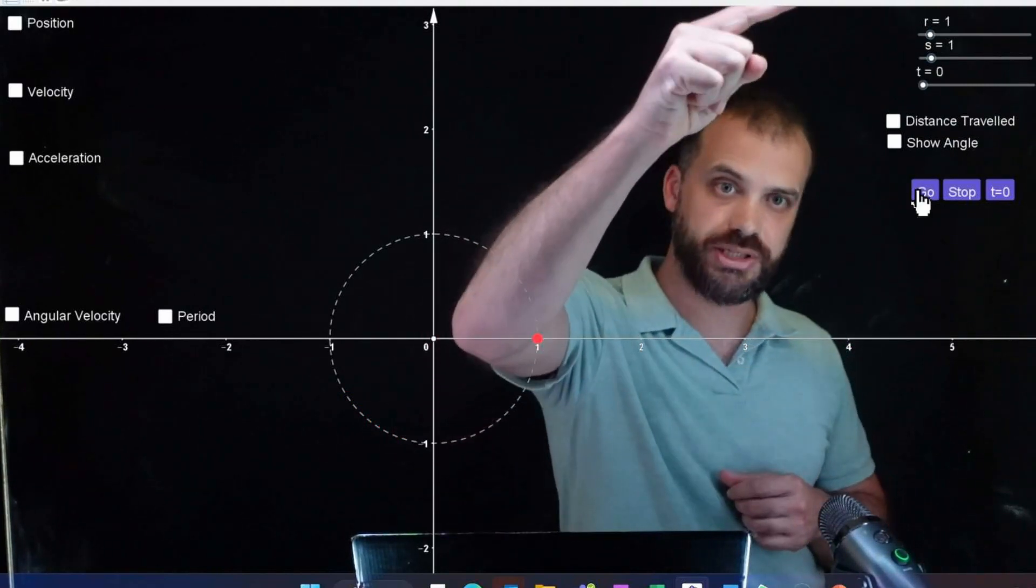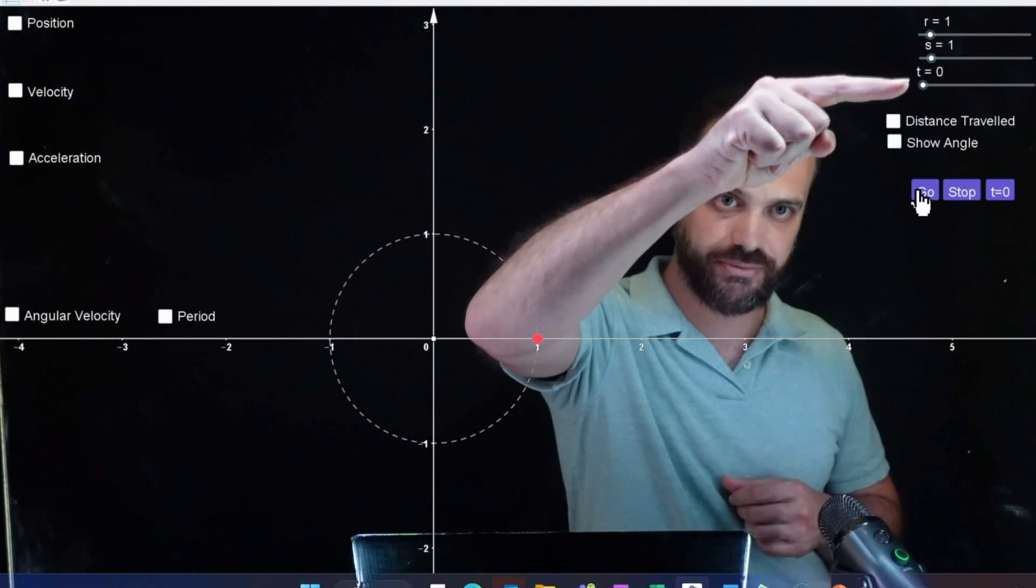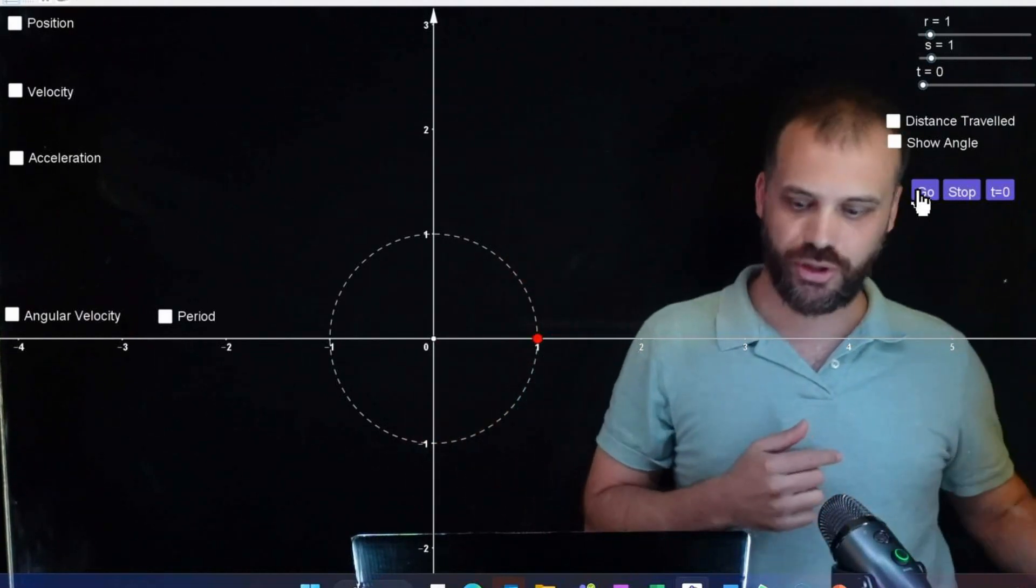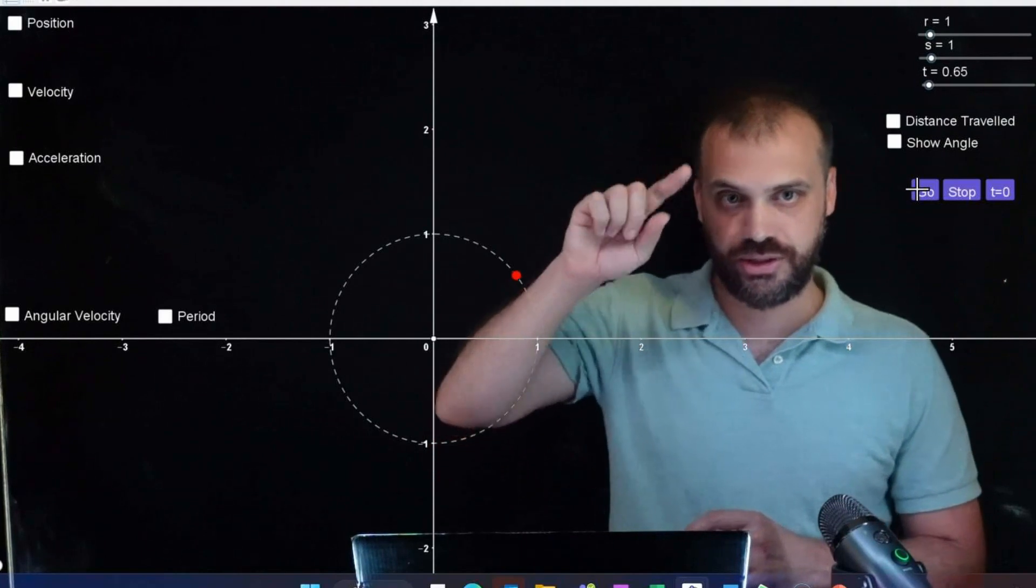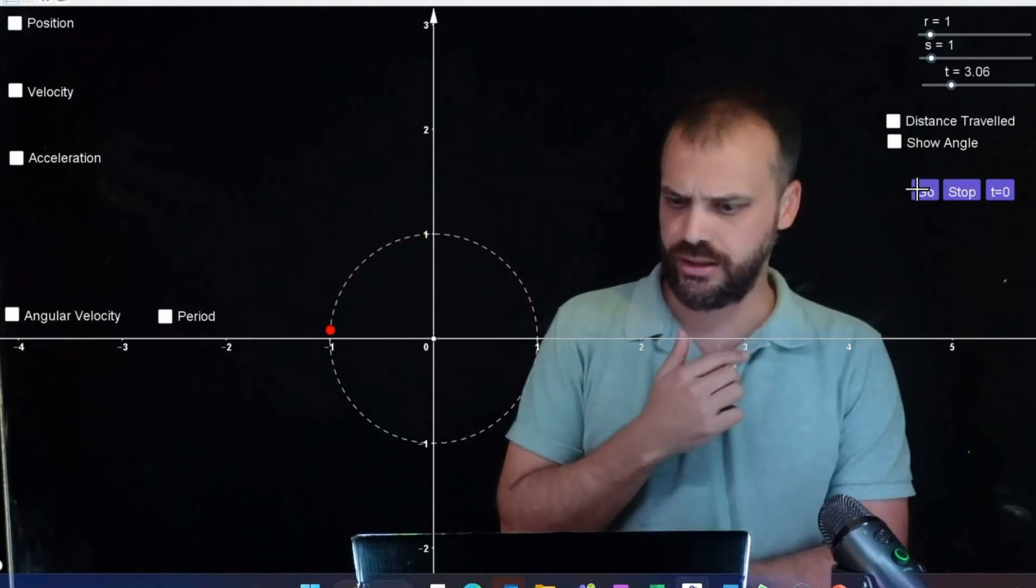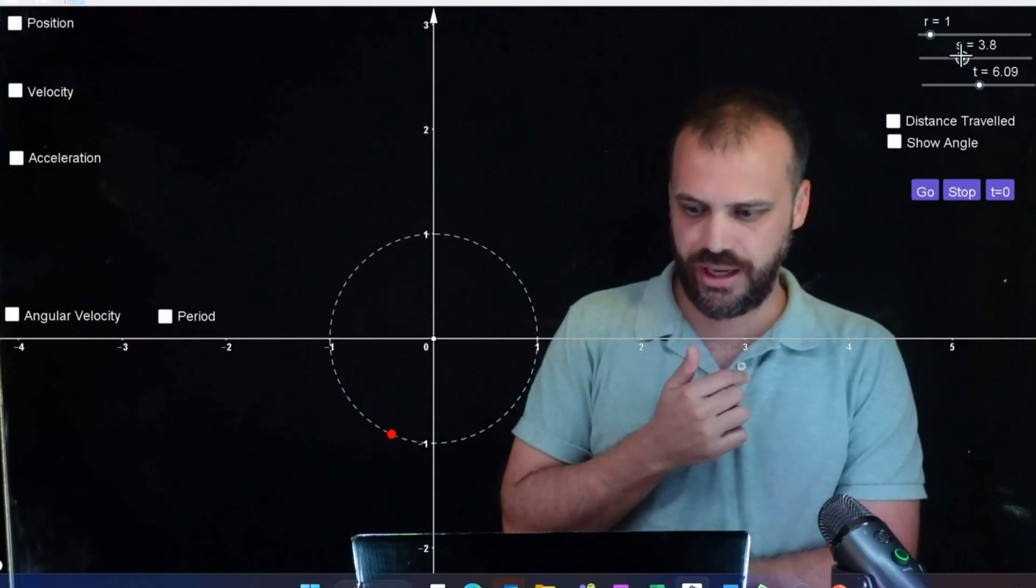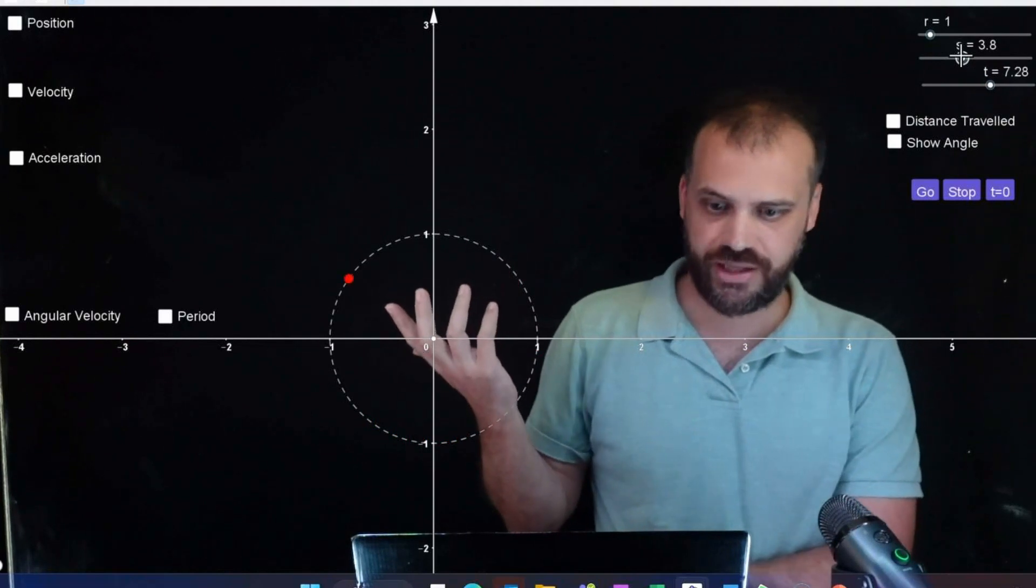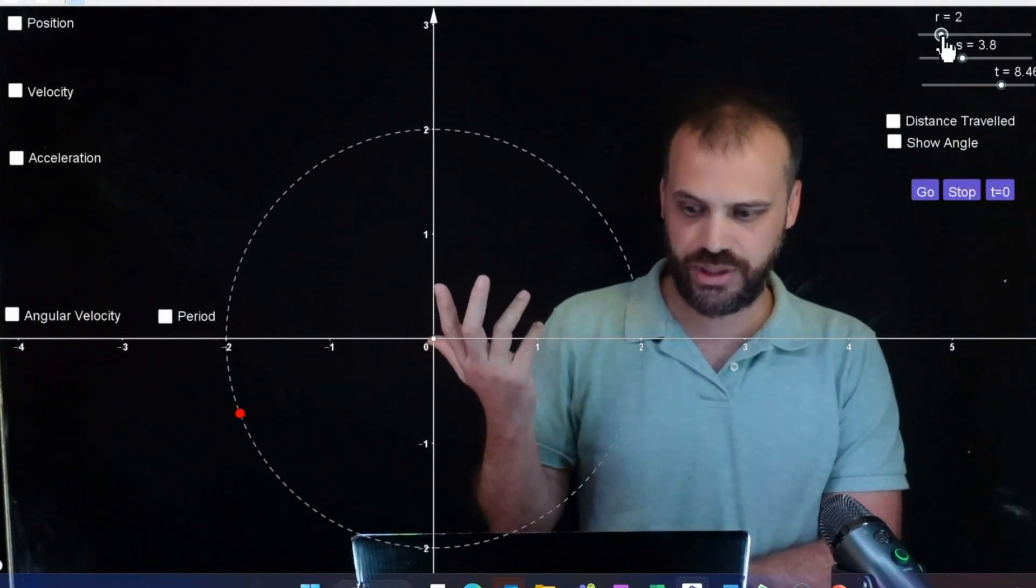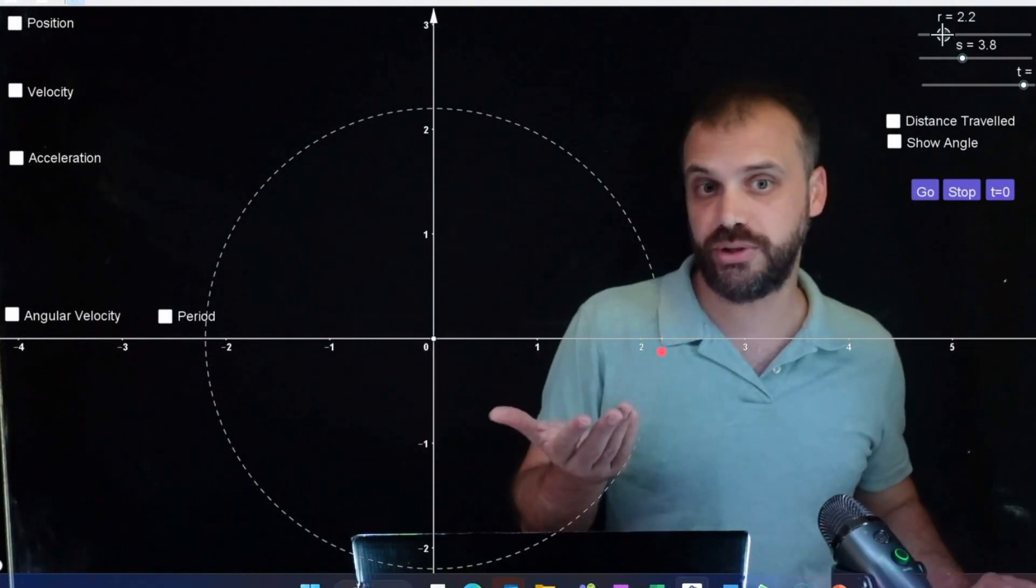Now let me introduce you to my sliders. I have radius, I have speed, and I have time. When I click go, you can see the time move forward and it moves with respect to time. Now if I speed it up, obviously what happens is you can see the red dot moves faster. If I change the radius, then we're dealing with a larger circle. So those are the variables that we're working with here.